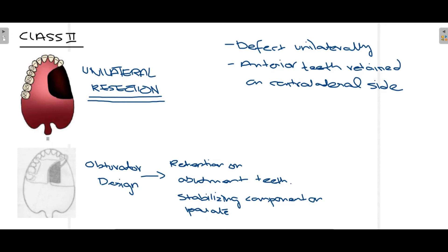When designing the obturator for Class 2, support is taken from the remaining teeth that are present. The obturator is designed to close the space created by the surgery. The stabilizing component is the palate, which is present in this region.